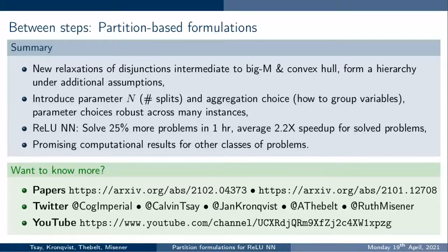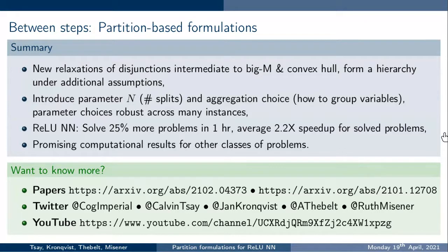In summary: we have relaxations intermediate between Big M and convex hull. With affine functions under specific assumptions, we achieve a hierarchy. Two new choices are introduced — the number of splits N and the aggregation strategy — but parameter choices are robust across instances. For ReLU neural nets, we solve 25% more problems per hour and achieve over 2× average speedup on problems already solvable by Big M. There are also promising computational results for other problem classes. The floor is now open for questions.